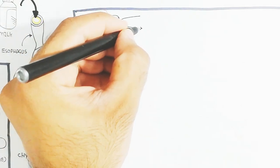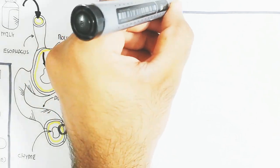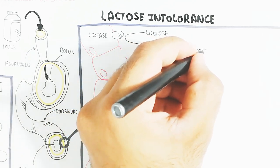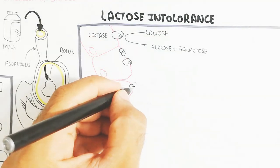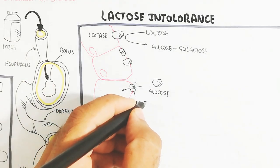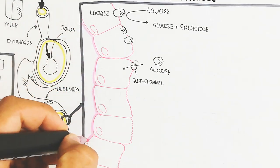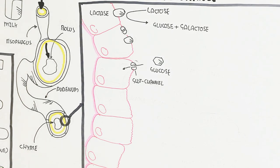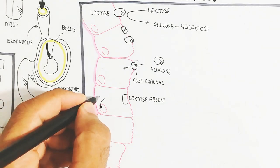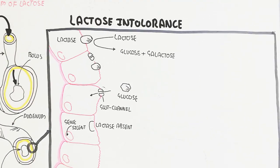In the small intestine, enterocytes are present. These enterocytes contain lactase enzyme on their brush border. This brush border lactase converts lactose into glucose and galactose using our own body's enzymes, without requiring bacteria. Glucose then enters easily through GLUT channels via sodium co-transport. However, if the lactase gene is silenced due to epigenetics, a gene defect, or family history, lactase is absent.